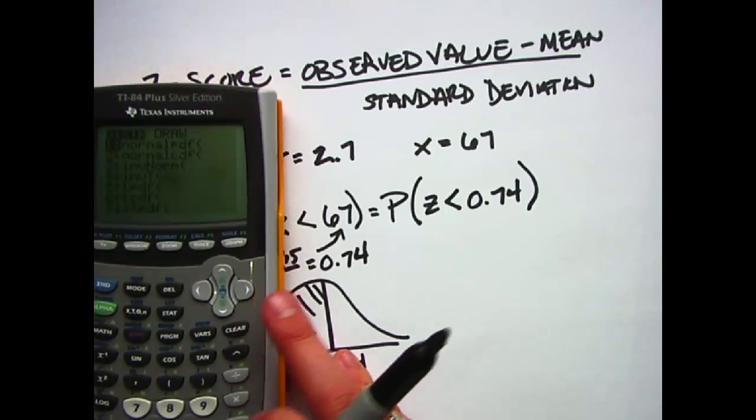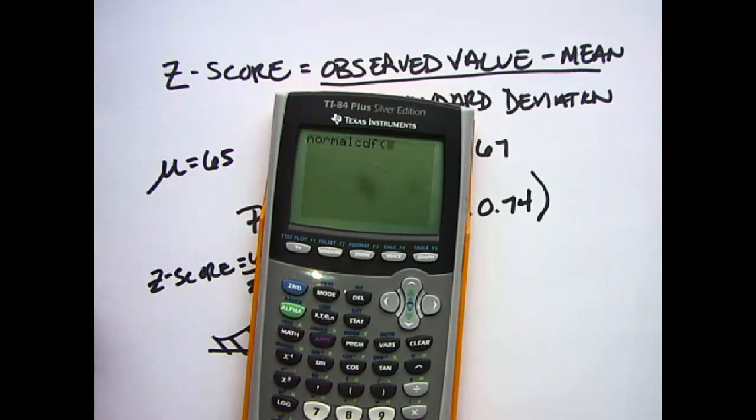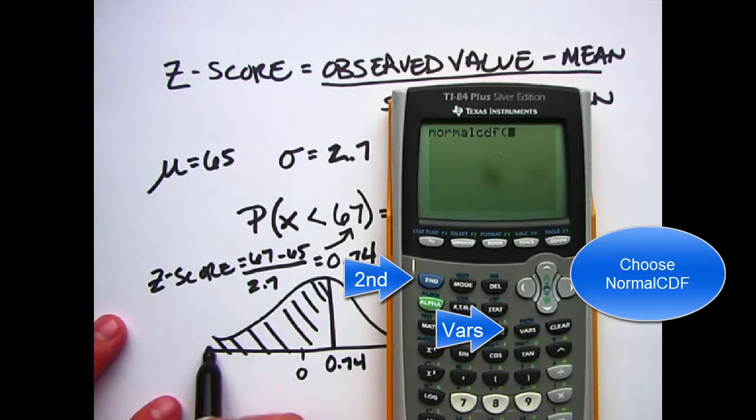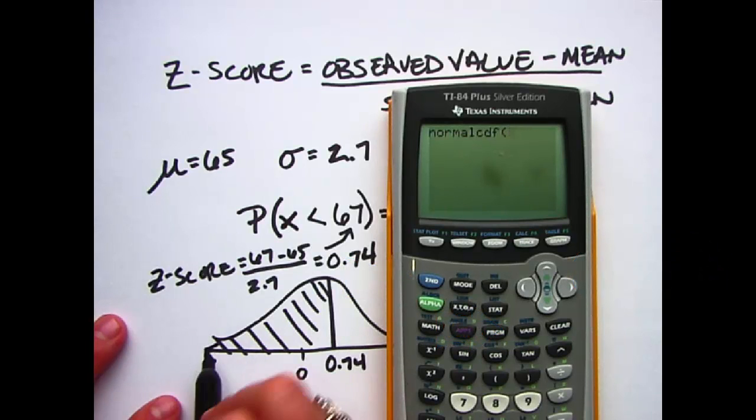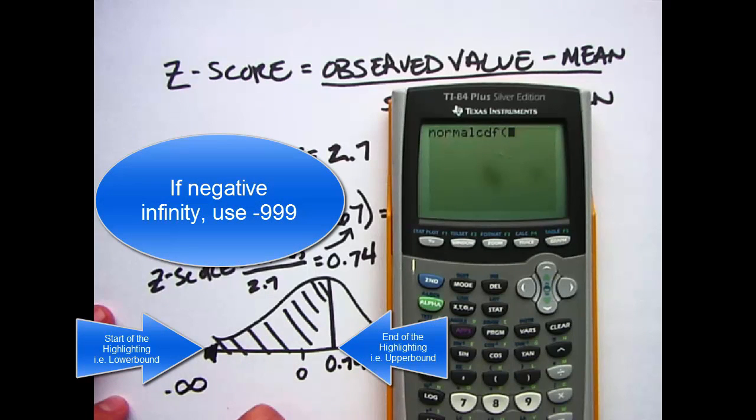Remember that's second and then vars, and then we're doing normal CDF because the z is connected to the normal curve. This wants where the highlighting starts, or a lower bound, and where the highlighting ends, or an upper bound. For this problem, our highlighting technically would be starting at negative infinity, but because the calculator doesn't have the capability of negative infinity, we're going to type negative 999, and then comma, and then you want to put where the highlighting ends, which is 0.74.